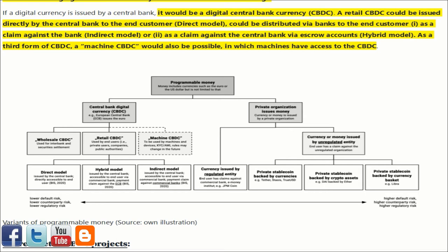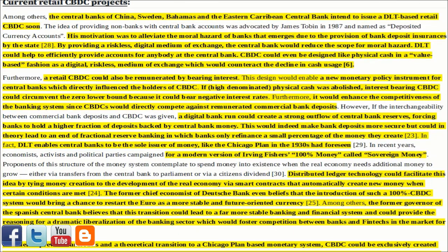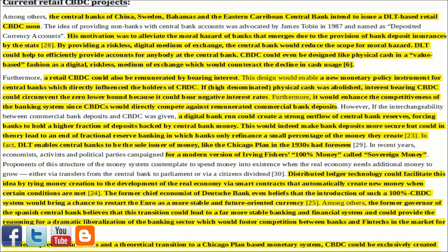A retail CBDC could be distributed via banks to the end customer — either as a claim against the bank (indirect model) or as a claim against the central bank via escrow accounts (hybrid model). As a third form of CBDC, a machine CBDC would also be possible, in which machines have access to the CBDC. Current retail CBDC projects include the central banks of China, Sweden, Bahamas, and the Eastern Caribbean Central Bank, which intend to issue a DLT-based retail CBDC soon.